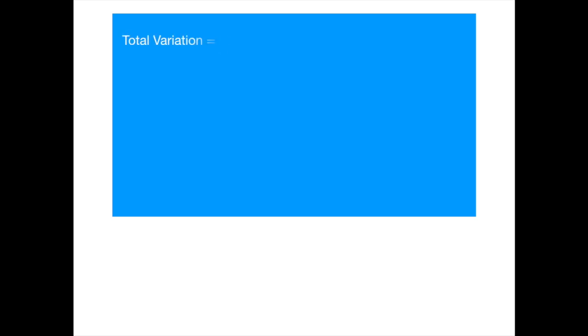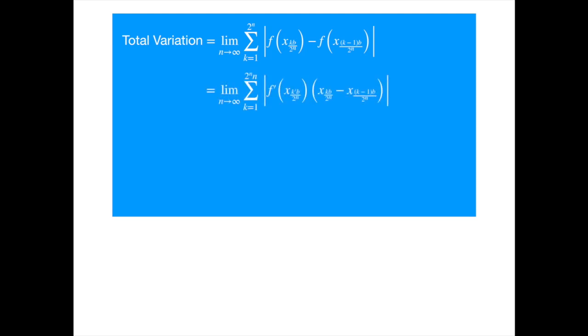To calculate the total variation of the other two functions, it is helpful to derive an alternative formula for the total variation. We can use the mean value theorem to write it in terms of the derivative of the function, where we use k-prime for the point where the tangent becomes parallel to the line through the two points. Now the length of the interval is positive, so we can take it out of the absolute value. We know that the limiting sum is essentially how the calculus guys introduce integration, so we write it as follows.